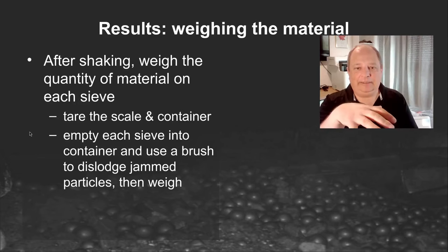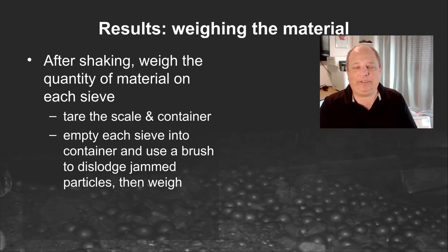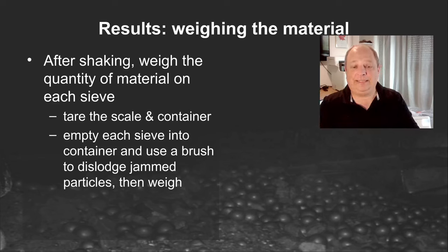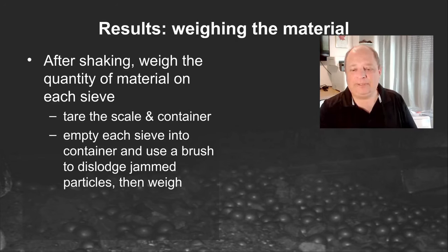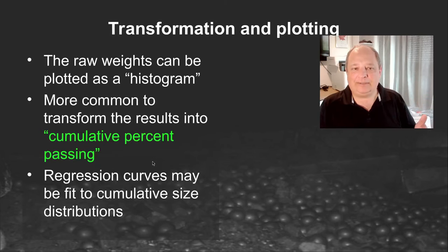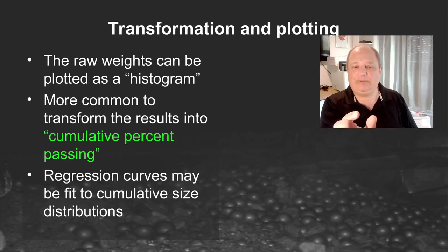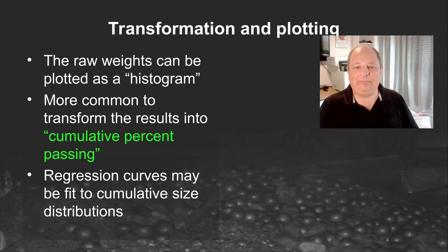Once the test is done, you take the sieve stack apart and weigh the amount of material in each size class. You pull off the coarsest sieve, carefully remove the material onto a tared container on a scale, then use a brush to lightly wipe off any material jammed in the apertures. You carry on all the way down, ending up with the amount of material in each size class. You can plot that as a histogram showing how many grams of material were in each size class.